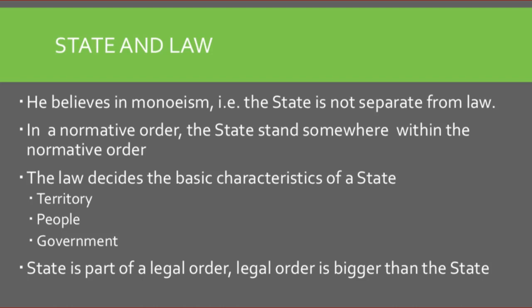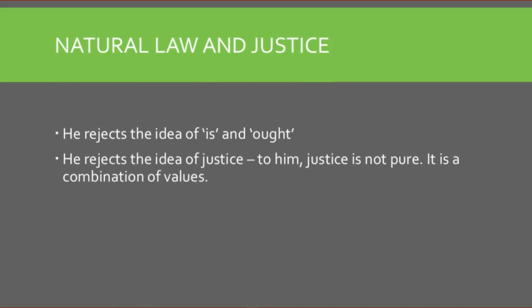When we talk about natural law and justice, natural law — as we have already learned — is something not agreed upon by Kelsen. Because the source of power for natural law is nature itself, whereas for positivism it is man-made law. Kelsen rejects the idea of 'is and ought' and rejects the idea of justice. According to him, justice is an extra-legal element from the law itself; by having justice, it is not pure law.